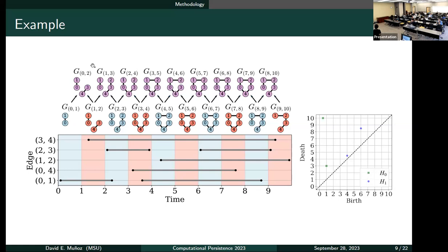In this case, we can use the rips complex of these graphs, but since we don't have any triangles, if we take r equal to one, it will be the same exact thing as the graphs. And then we compute the zigzag persistence.